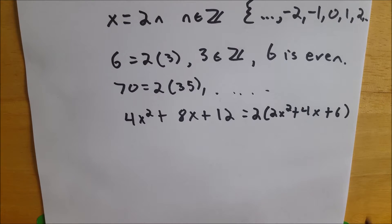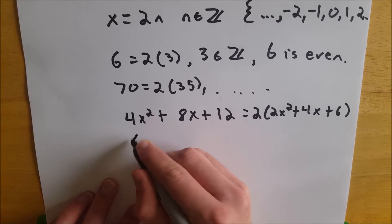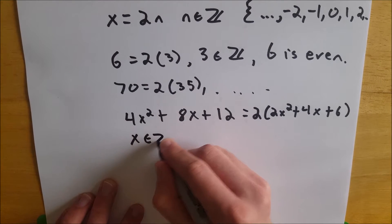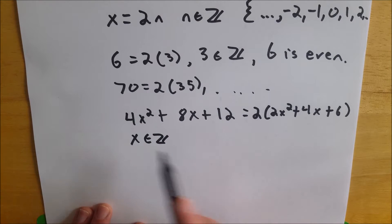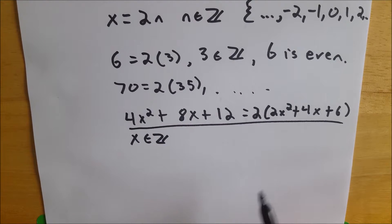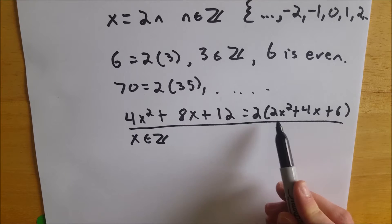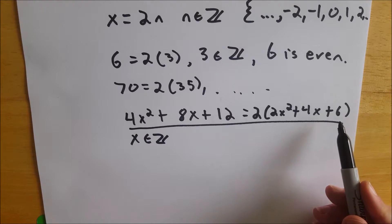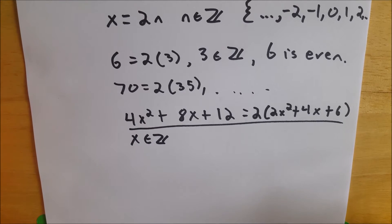And as long as we're given that x is an integer, so if we know that x is an element of the integers, then this is how easy it is to prove that this polynomial is even. Just show that it equals 2 times this expression, and this, by closure, would be an integer, so long as x is an integer.